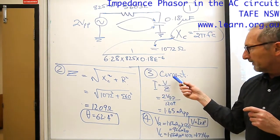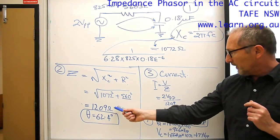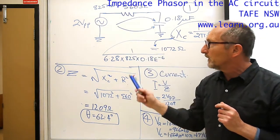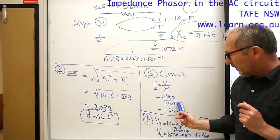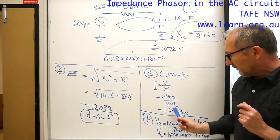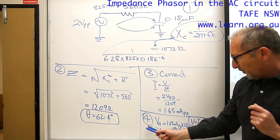Number 3 we have to find the current. Now that we know the impedance of the circuit we can use the input voltage which is 2 volts peak to peak, divide that by the impedance, and then that will give us the current flowing in the circuit.